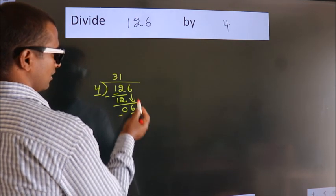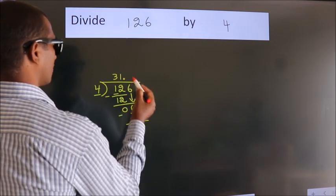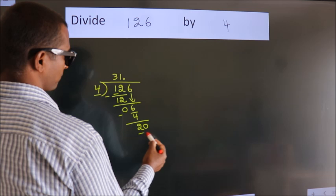After this, no more numbers to bring down. So what we do is we put a dot and take 0. So 20.